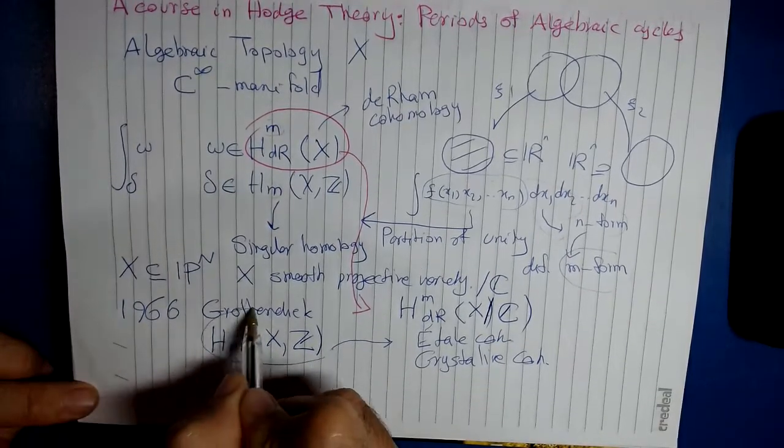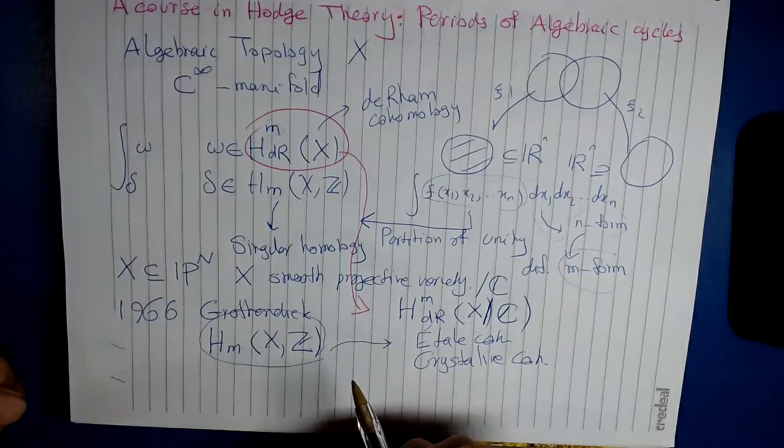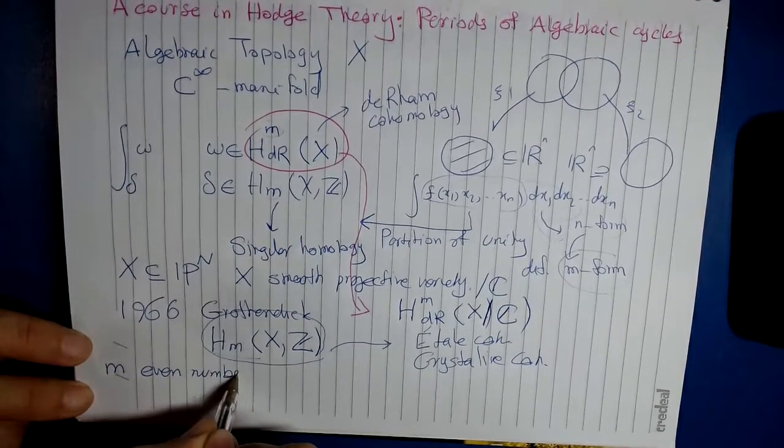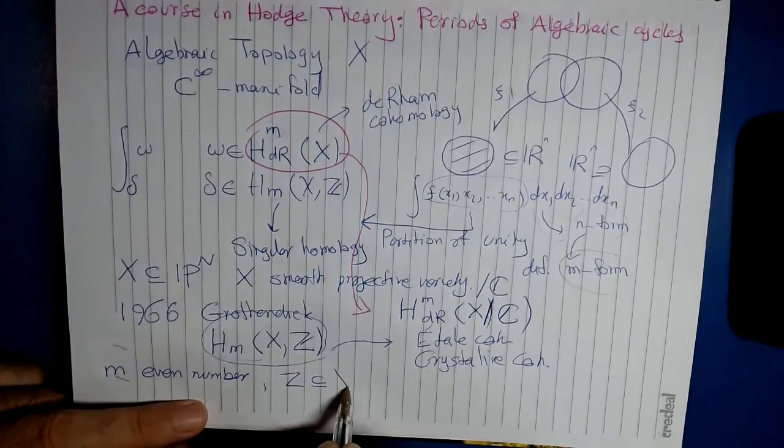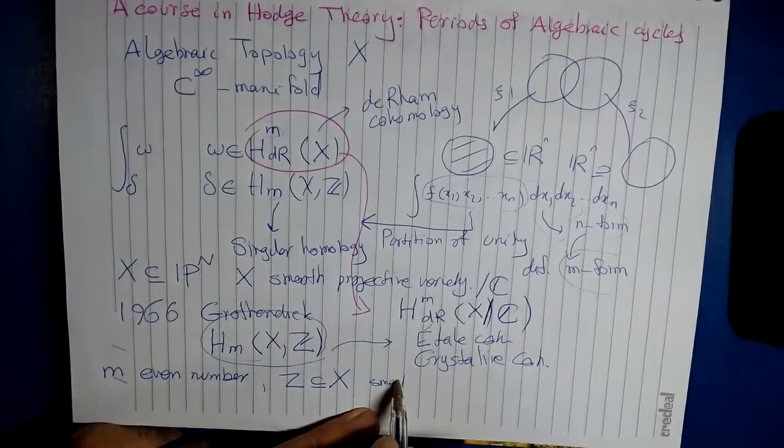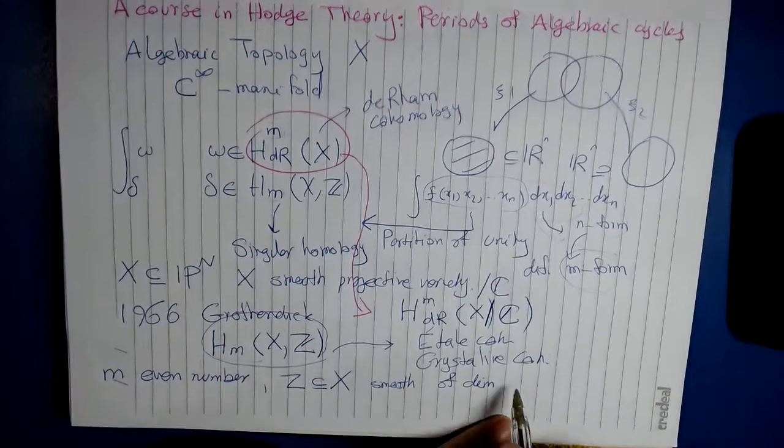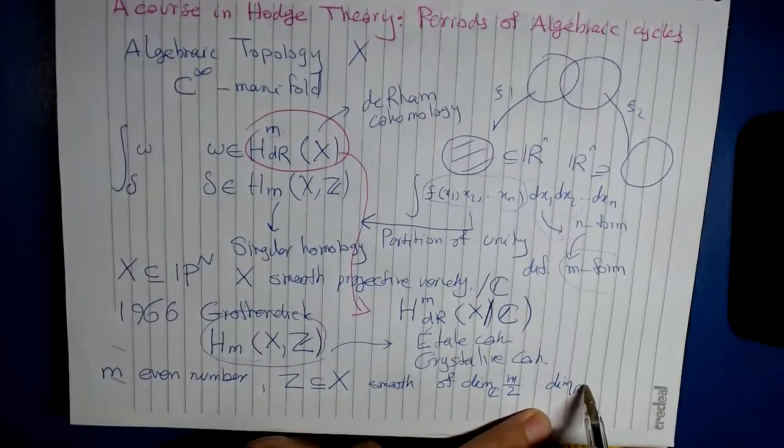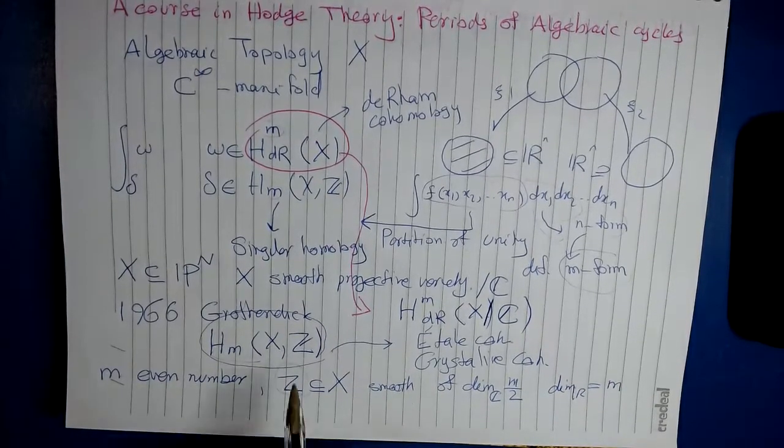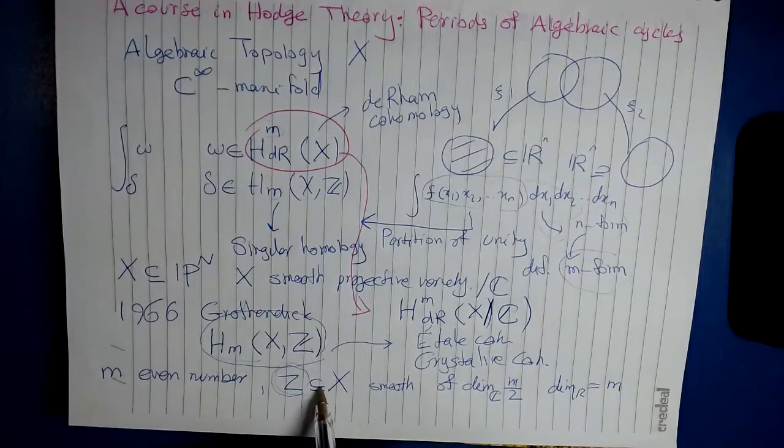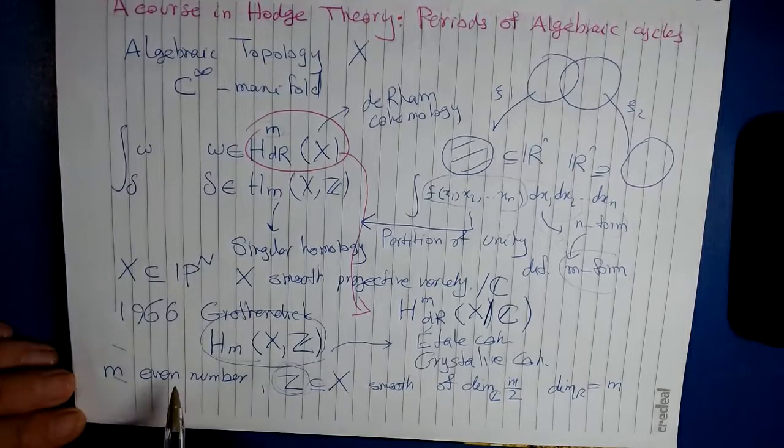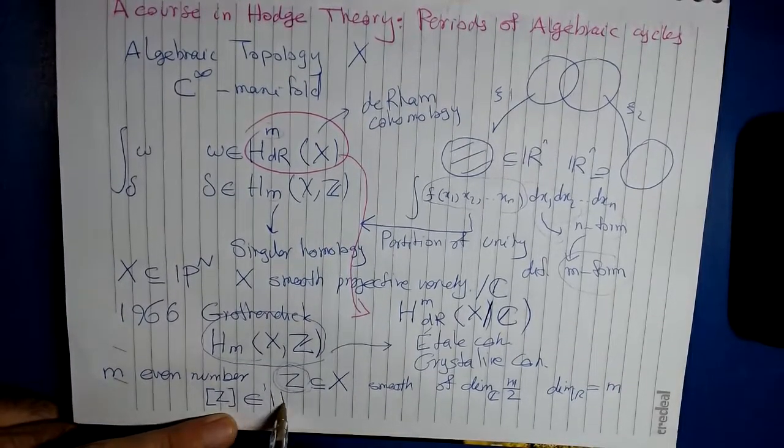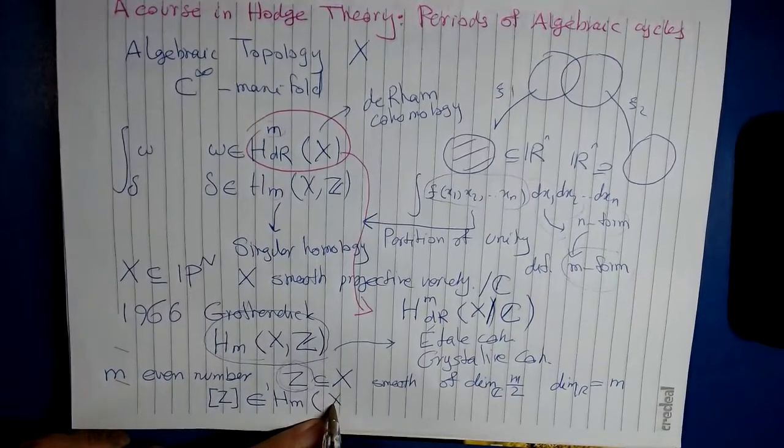Despite the fact that we cannot define homology in algebraic geometry, we can still construct some elements of this. From now on, assume that m is even number. And take Z, a sub-variety of X. For now, let's assume that this is smooth, of dimension m over half. This dimension is the complex dimension, so its real dimension will be m. So this Z is an algebraic sub-variety of X, of dimension m/2, and real dimension m. And even in the course of algebraic topology, we know how to attach to this a homology class H_m(X,Z).